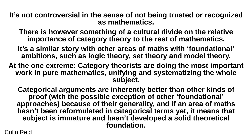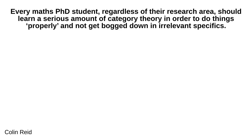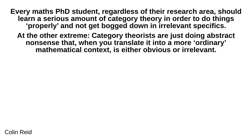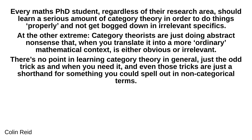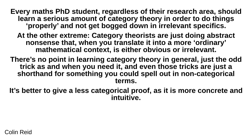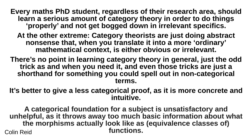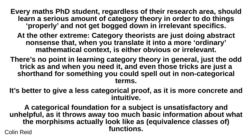Categorical arguments are inherently better than other kinds of proof, because of their generality, and if an area of maths hasn't been reformulated in categorical terms yet, it means the subject is immature and hasn't developed a solid theoretical foundation. Every maths PhD student, regardless of their research area, should learn a serious amount of category theory. At the other extreme, category theorists are just doing abstract nonsense that, when you translate it into a more ordinary mathematical context, is either obvious or irrelevant. There's no point in learning category theory in general — just the odd tricks when you need it — and even those tricks are just a shorthand for something you could spell out in non-categorical terms. It's better to give a less categorical proof, as it is more concrete and intuitive. A categorical foundation for a subject is unsatisfactory and unhelpful, as it throws away too much basic information about what the morphisms actually look like as equivalence classes of functions.